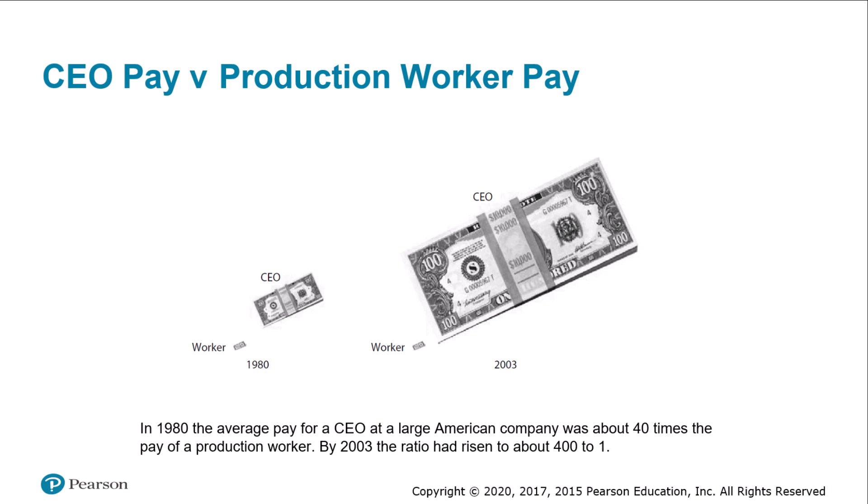Sometimes the qualitative difference between the top product and the second-best is very slight, yet that can be the difference between success and failure. Corporations compete fiercely for top executive talent, and as a result, CEO compensation at America's largest companies has risen much faster than the wages of production workers. In 1980, the average CEO pay at a large American company was about 40 times that of a production worker; by 2003, that ratio had risen to about 400 to one.